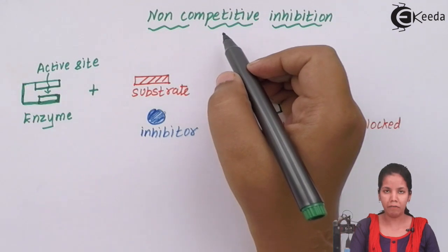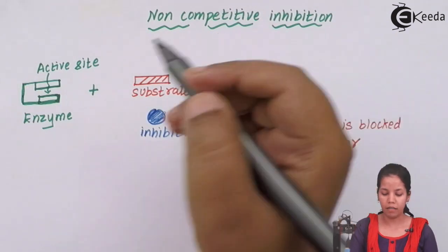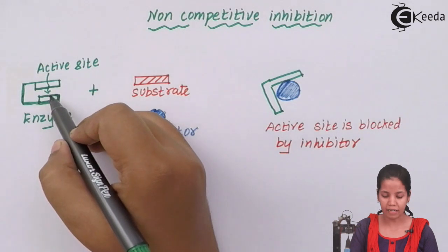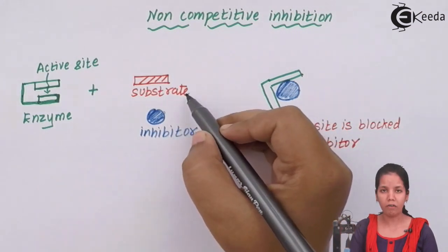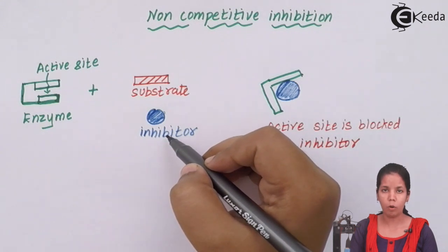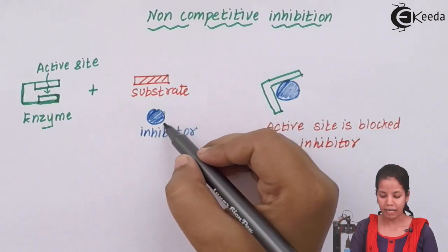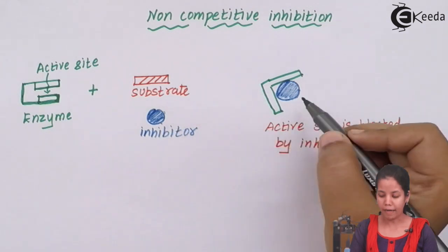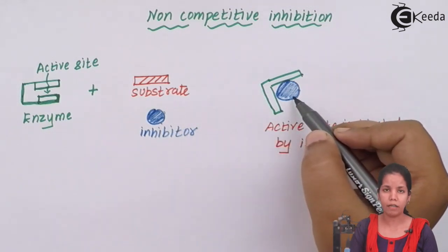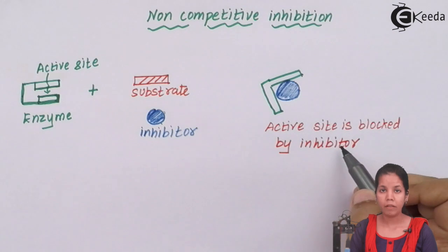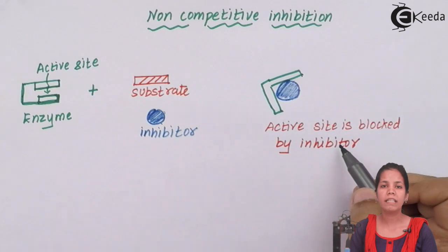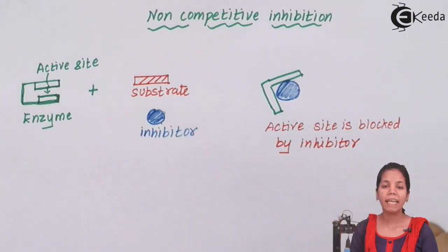The working of a non-competitive inhibitor is as follows: the enzyme has its active site as well as functional groups. Both the substrate and inhibitor are present, but the substrate does not fight with the inhibitor for the active site. Instead, the inhibitor directly binds to the functional group or active site of the enzyme, blocking it, which results in the formation of a certain compound leading to the death of the organism.